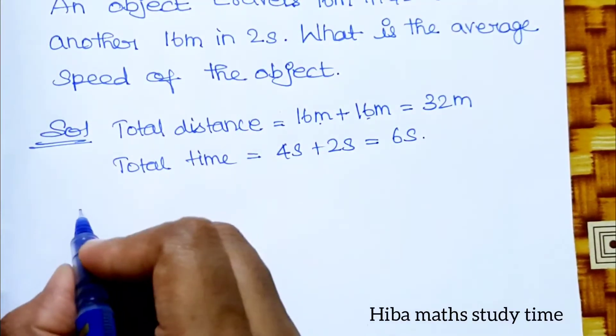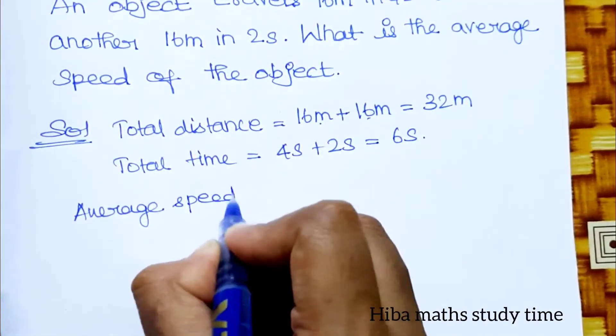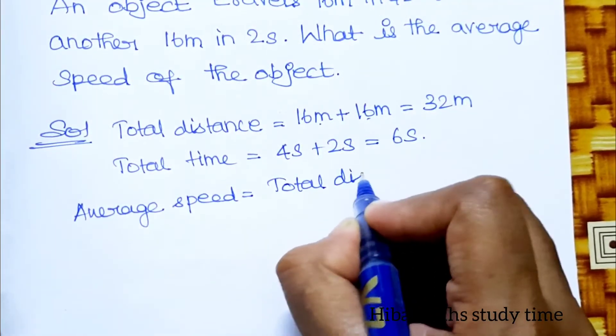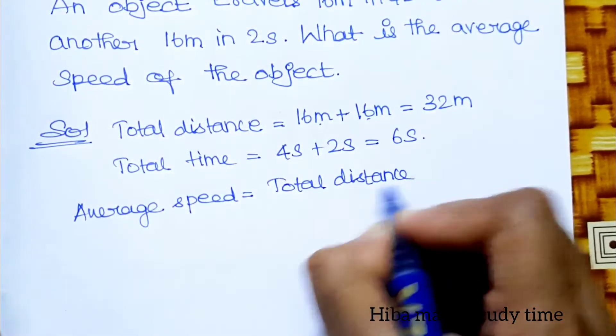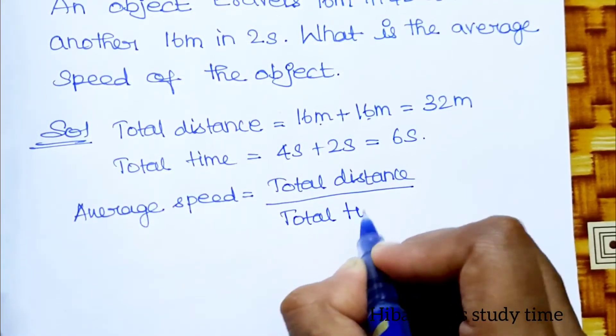Average speed is equal to total distance divided by total time.